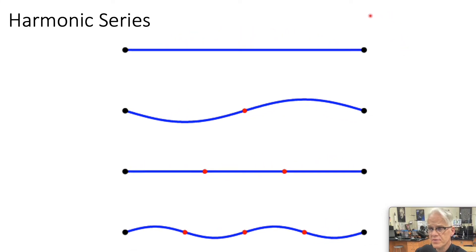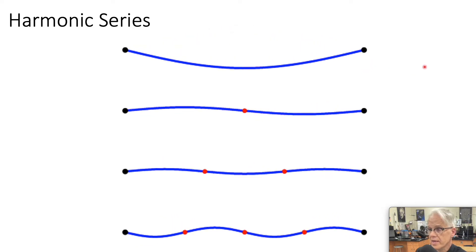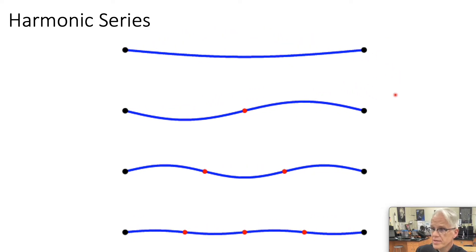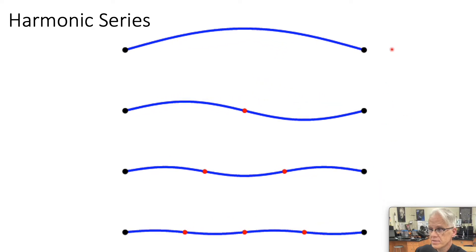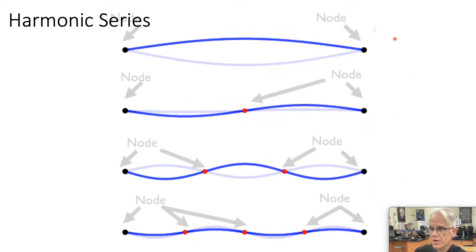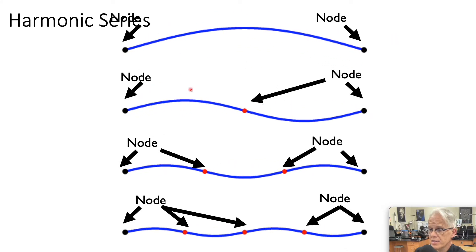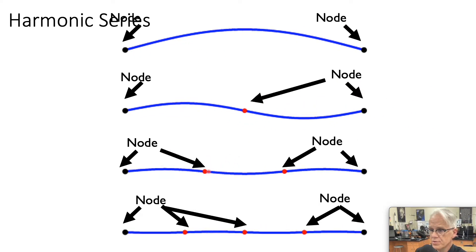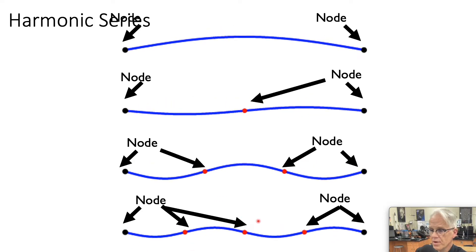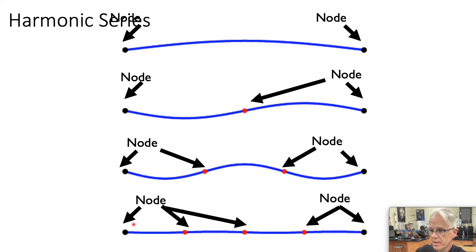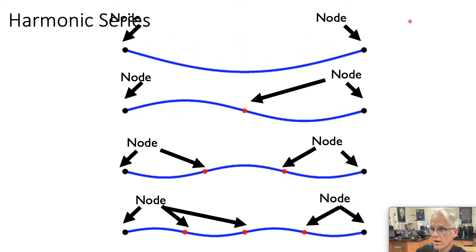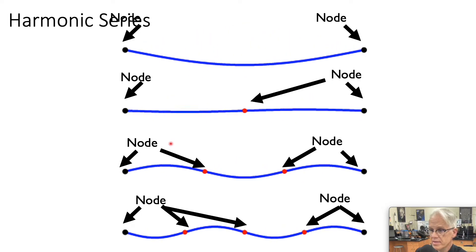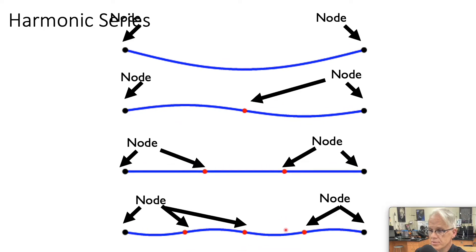At certain frequencies, for certain lengths of a string and depending on its density, we will get different modes of standing waves — only at certain frequencies do these occur. Notice that we have nodes at each end. The first mode has one large antinode. The second has one node in the middle and two antinodes. The third has two interior nodes and three antinodes. The fourth has three interior nodes and four antinodes.